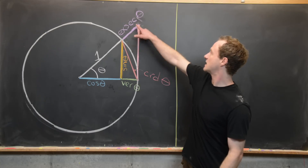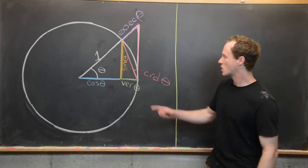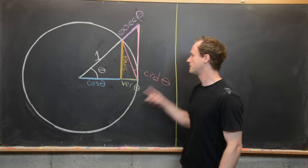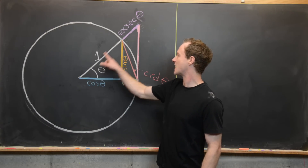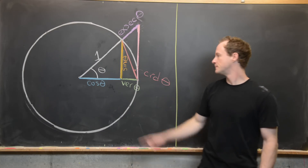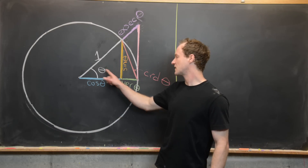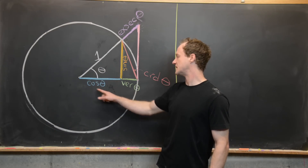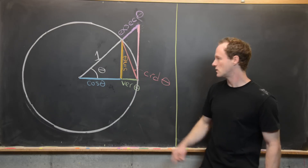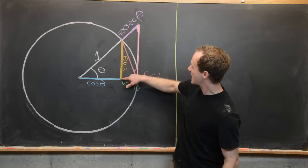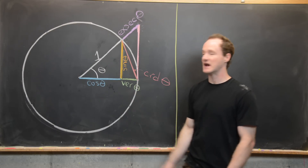The versine, the exsecant, and the chord function. Let's recall that if we have a unit circle and we put a triangle inside this unit circle with hypotenuse 1 — a right triangle — then the side length shown in blue is given by cosine theta, where theta is that angle. And then this height of the triangle is given by sine theta.